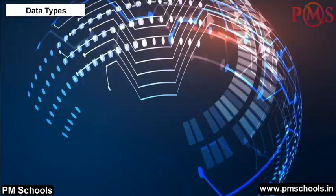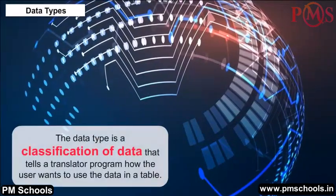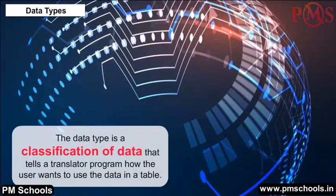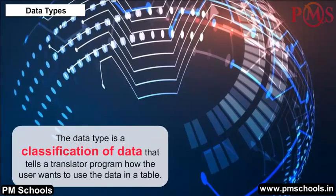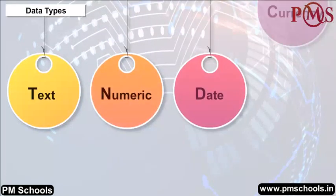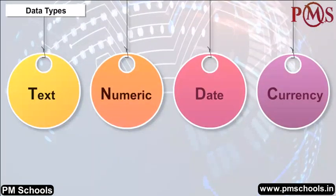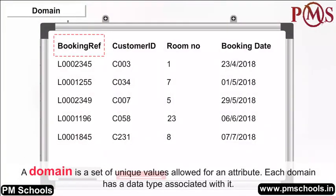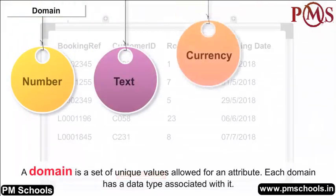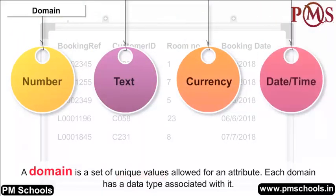Data Types: A data type is a classification of data that tells a translator program how the user wants to use the data in a table. It can be text, numeric, date, currency, etc. Domain: A domain is a set of unique values allowed for an attribute. Each domain has a data type associated with it, such as number, text, currency, date or time, and each domain must have a name that helps in interpreting its values.